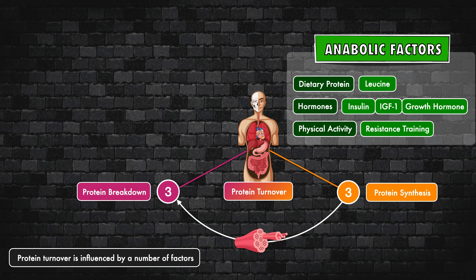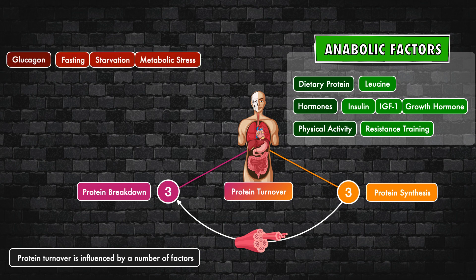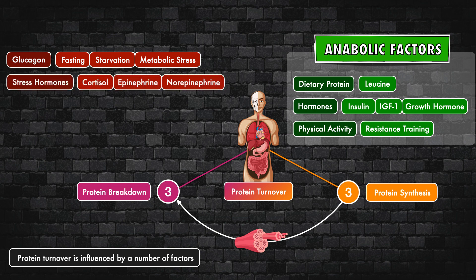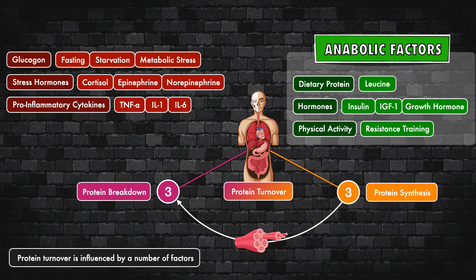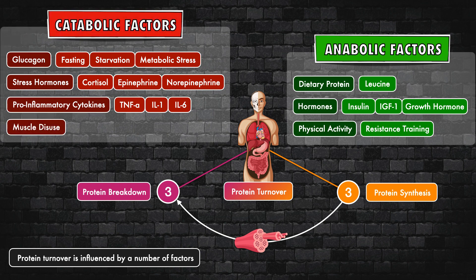Factors that stimulate protein breakdown include the hormone glucagon in response to fasting, starvation, or metabolic stress; stress hormones like cortisol, epinephrine, or norepinephrine; pro-inflammatory cytokines like tumor necrosis factor alpha and interleukins 1 and 6; and muscle disuse. We can call these the catabolic factors.